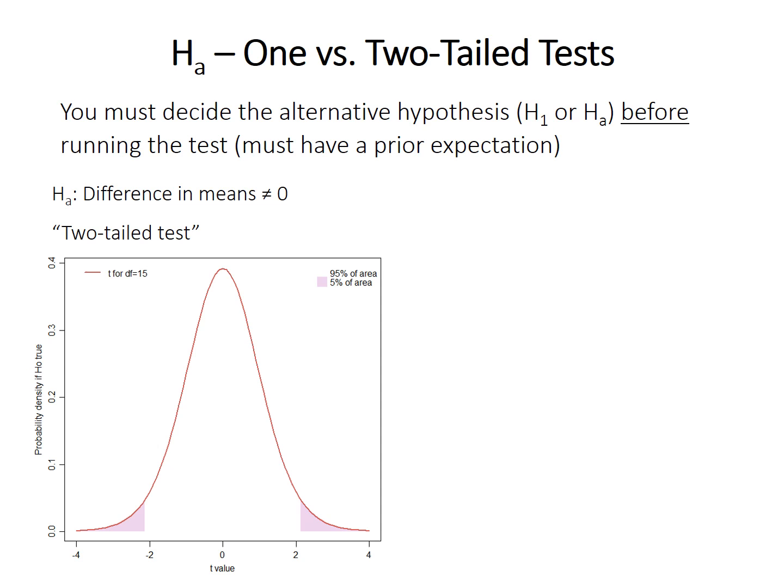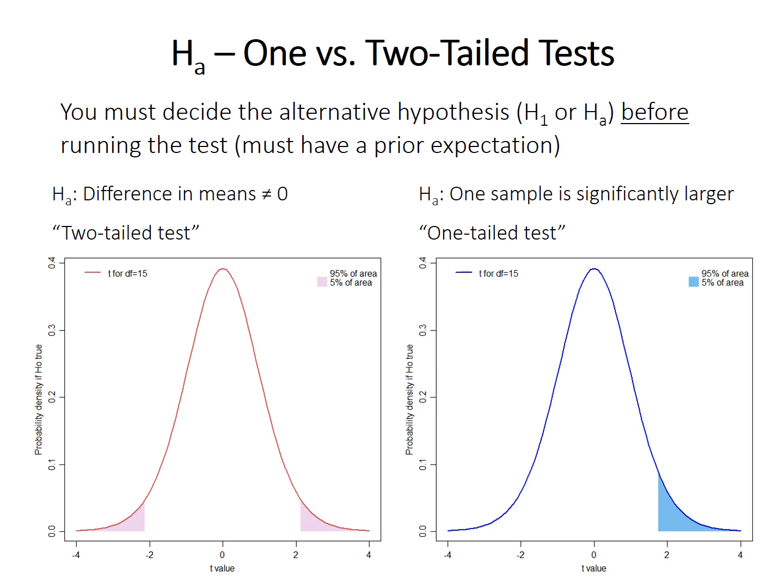If you choose an alternative hypothesis that one sample should have a greater or smaller mean, this is called a one-tailed test. In that case, you look at the area under the curve only in the direction that your t-statistic actually is. Importantly, you must decide on the alternative hypothesis prior to looking at the data — it's based on some prior expectation, not the data. In a one-tailed test, the p-value is based on the area under the distribution beyond the t-statistic in just that one direction.